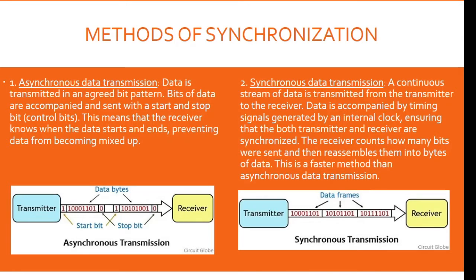Synchronization. In order for data to be transferred between computer systems, they have to be synchronized. Two methods of synchronization are: number one, asynchronous — data is transmitted in an agreed bit pattern, and bits of data are accompanied by a start and stop bit, also known as control bits, so the receiver knows when the data starts and ends, preventing data from becoming mixed up. Number two, synchronous — a continuous stream of data is transmitted, accompanied by timing signals generated by an internal clock, ensuring both transmitter and receiver are synchronized. The receiver counts how many bits were sent and reassembles them into bytes of data. This is a faster method than asynchronous data transmission.